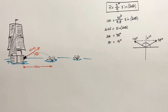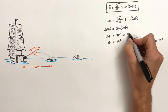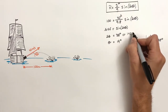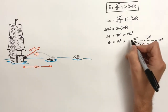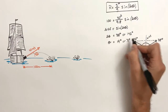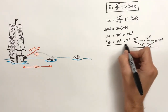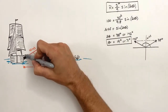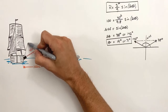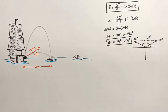Now it makes no sense that the cannon would be shot at 142 degrees — that would be away from the canoe, and the cannonball would land on the other side of the ship. But if we divide that by 2 in solving for theta, we find theta can equal either 19 degrees or 71 degrees. This means the cannon can be shot at a low 19 degrees or a very high 71 degrees, and either angle will allow the cannon shell to strike the canoe.